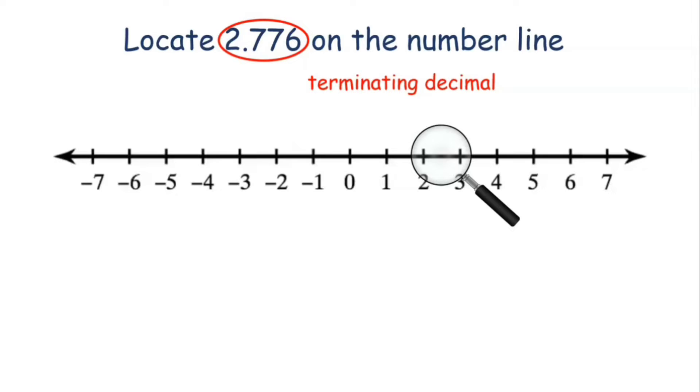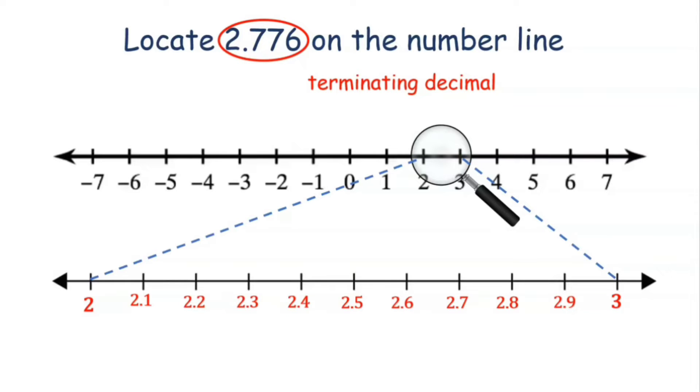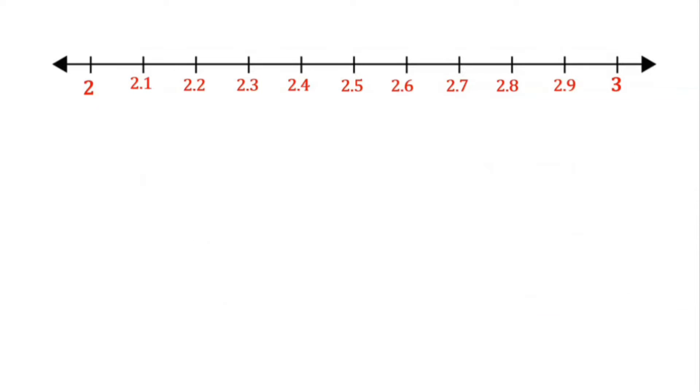Assuming that we have a magnifying glass in our hand, look at the portion between 2 and 3. Divide this portion into 10 equal parts as shown between 2 and 3. So the markings will be like 2.1, 2.2, 2.3, 2.4, and so on up to 3. Now our number is 2.776.